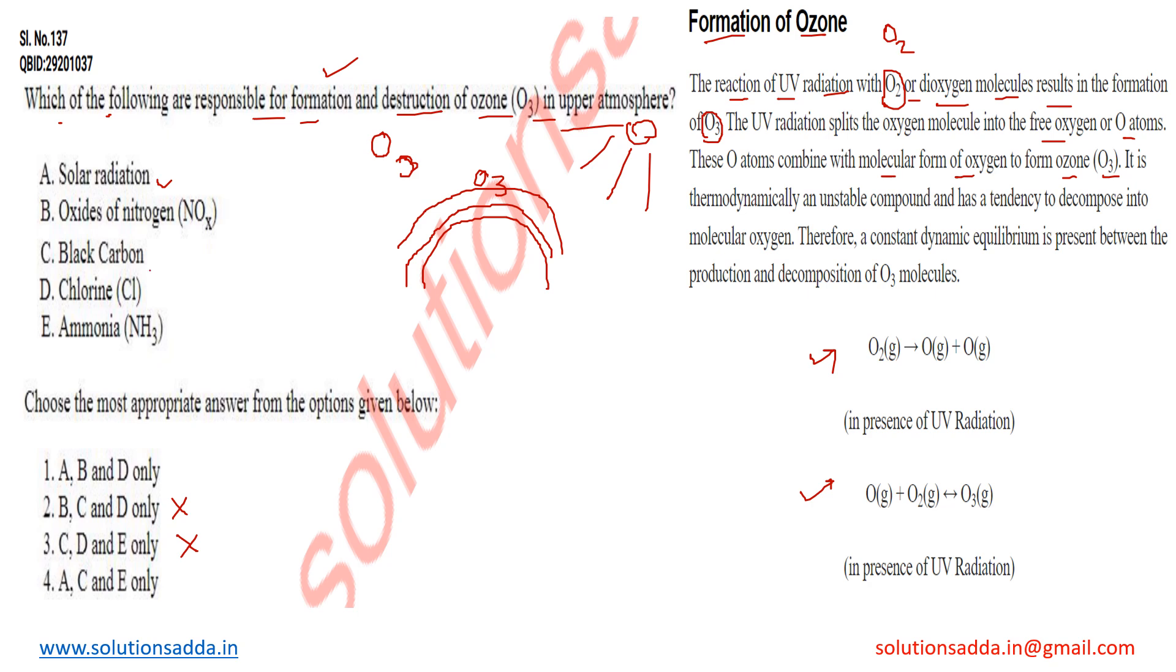Now we know that chlorine is one of the major components on the basis of which O3 can be destroyed. So chlorine is one of the crucial parts which we cannot ignore from these options. So the option which contains chlorine is D. Option number D is contained by the first option only, so we can eliminate the fourth option as well. So the correct option for this particular question will be option number one.